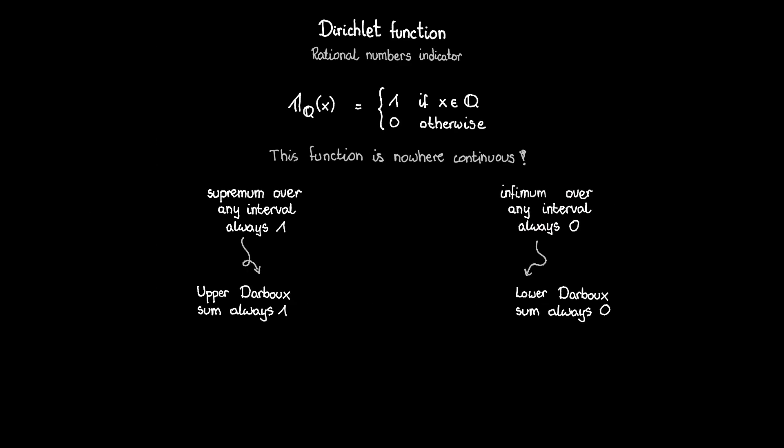Since rational numbers are a dense subset of real numbers, whatever partition we choose, the supremum over any interval will be equal to 1 and the infimum will be 0. Hence, every lower Darboux sum will be equal to 0 and every upper will equal 1.